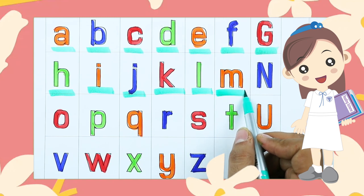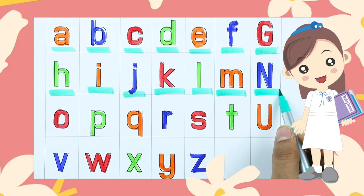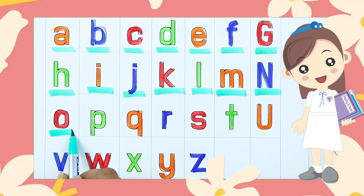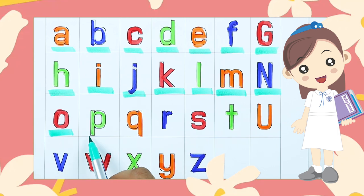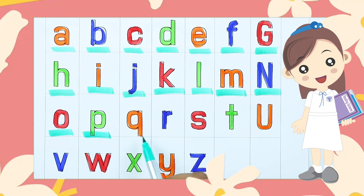M. M for monkey. N. N for nest. O. O for octopus. P. P for parrot.